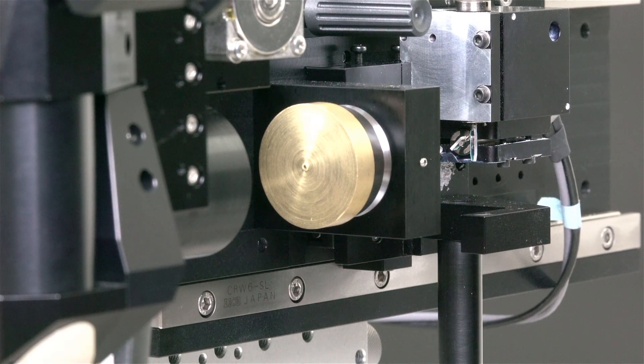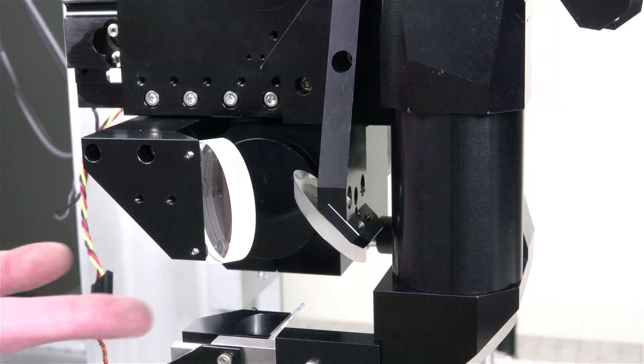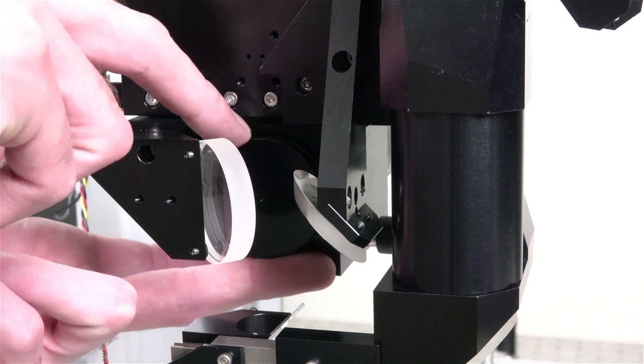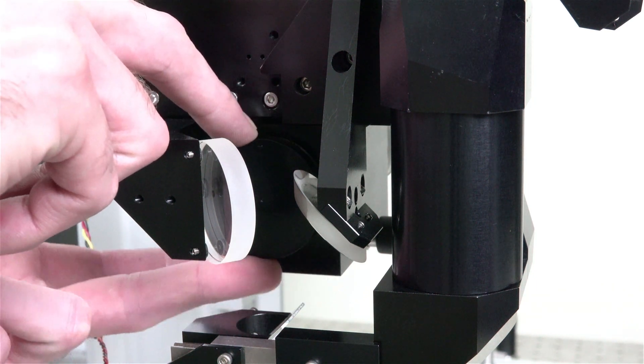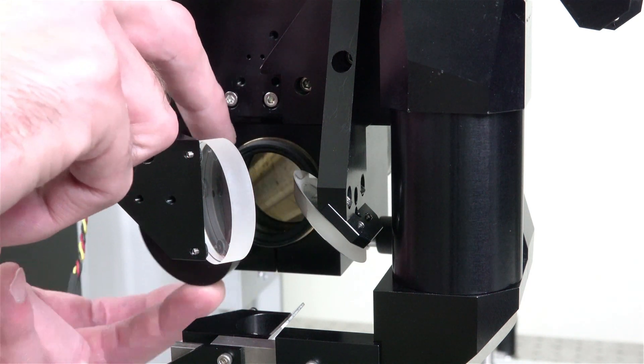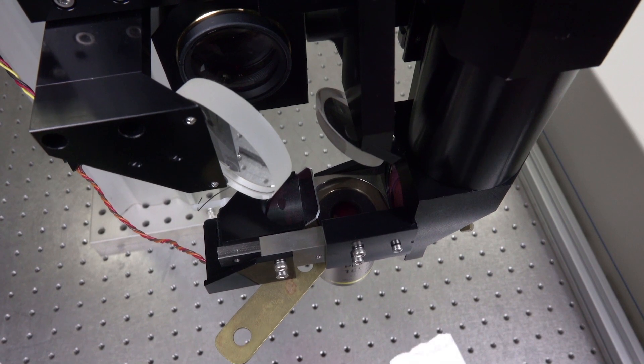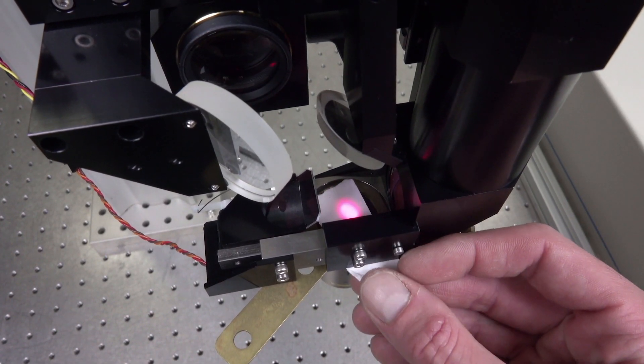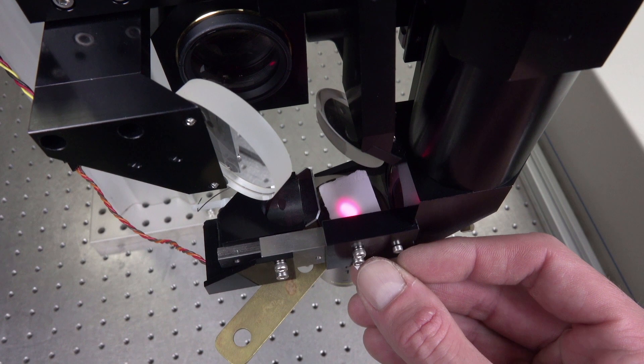The final step is to remove the alignment pinholes over the tube lens and scan lens on the back of the microscope and view the imaging beam on the back aperture of the objective. This is easily done by sliding a piece of business card or paper in the narrow space directly over the objective. This will allow you to view the shape and position of the beam.